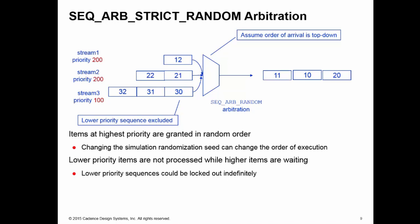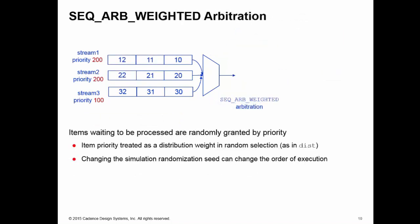The final prioritized randomization scheme is weighted. This time, items waiting to be processed are randomly granted by looking at their priorities. The weight of the individual item determines how probable it is that we'll select that particular item. Each item priority is treated as a distribution weight, as if we were using the dist constraint on a randomization call. Because this is random, changing the seed can change the execution order of the items.